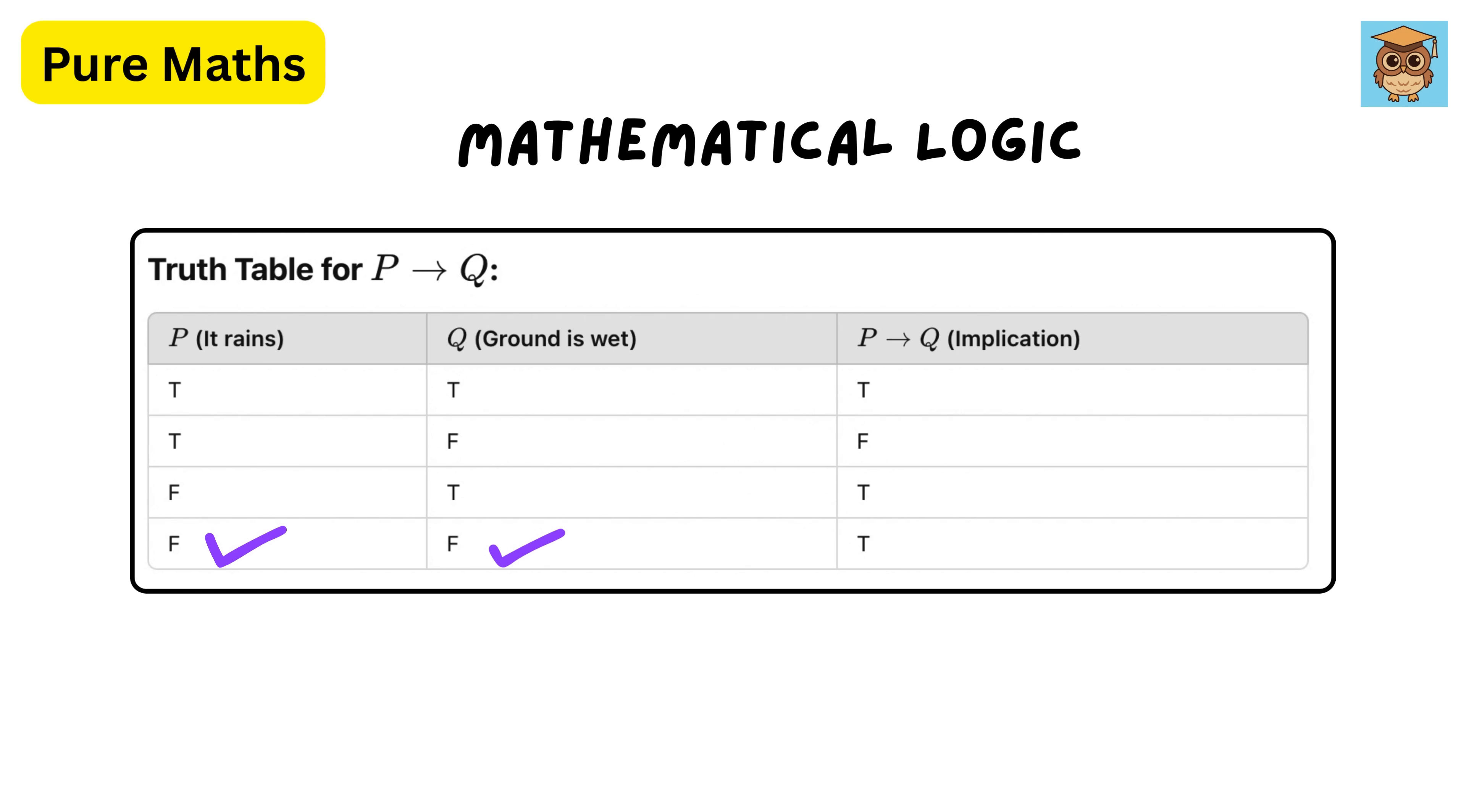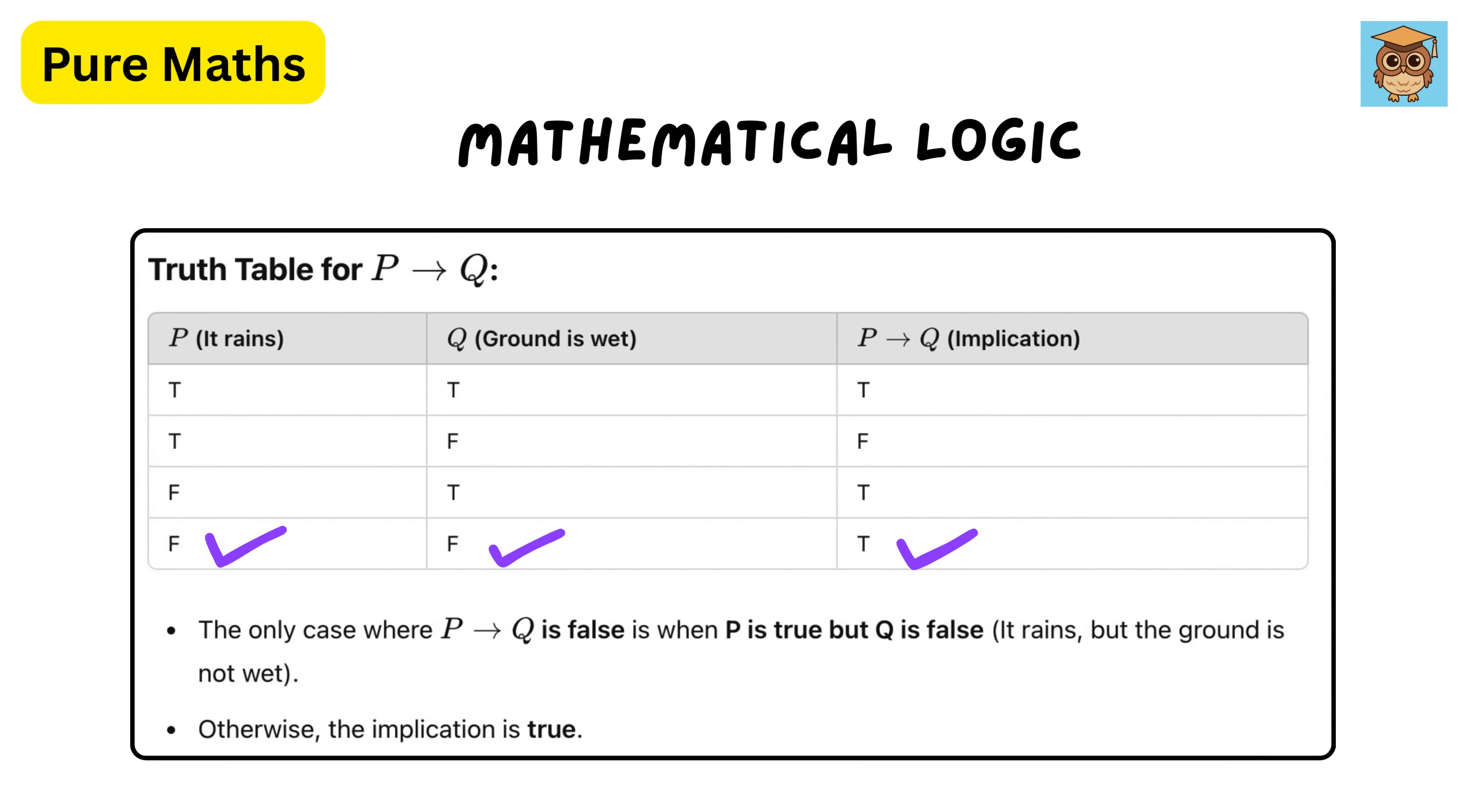Finally, if it does not rain and the ground is not wet, then p implies q remains true. This follows the standard rule of implication in mathematical logic, where the only false case is when p is true and q is false.